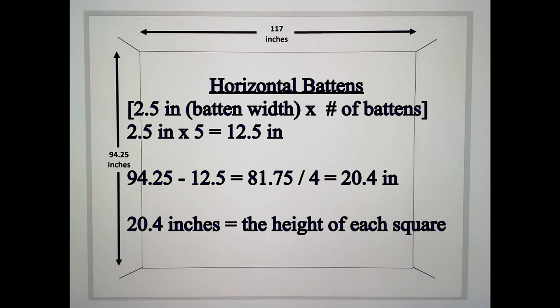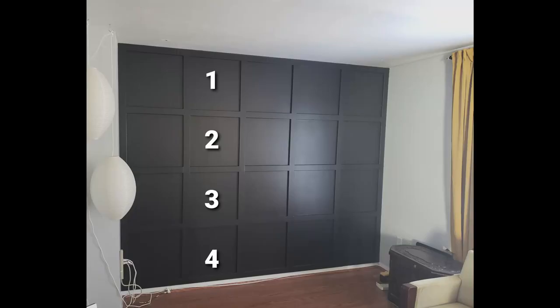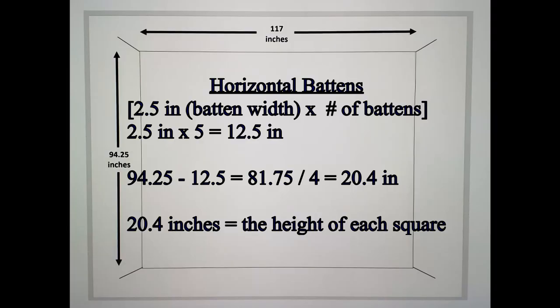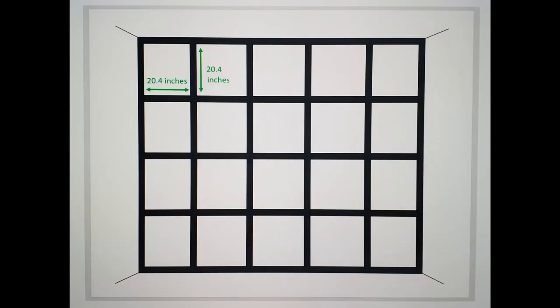I'm going to take that total, I'm going to divide that by four because those are the number of squares or empty spaces I was going to have on my wall. That also gave me a total of 20.4 inches. Now the fact that the height and width of each space came out the same measurement, 20.4, meant I was going to have perfect squares on my wall.